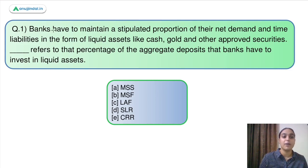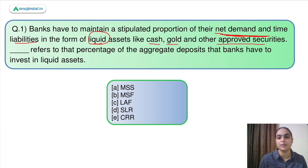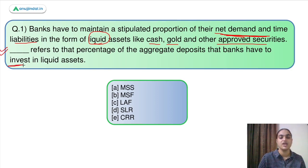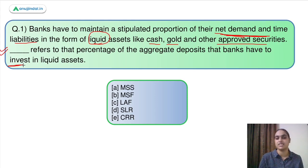The question says banks have to maintain a stipulated proportion of their net demand and time liabilities in the form of liquid assets, which include cash, gold and other approved securities. You have to identify what is to be filled in the blank — which refers to that very percentage of aggregate deposits that banks have to invest in liquid assets.